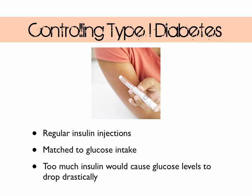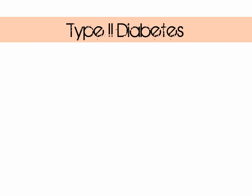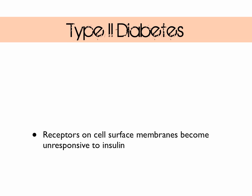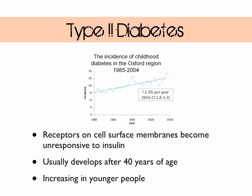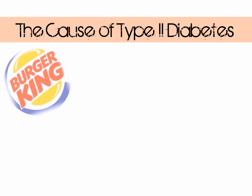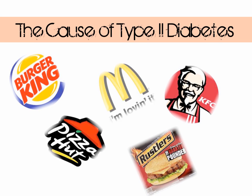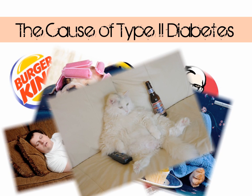Type 2 diabetes occurs when receptors on the cell surface membrane become unresponsive to insulin, and this usually develops in adults of 40 years and older. However, more recently the incidence of type 2 diabetes in children has been increasing, as shown in the graph. Lifestyle is closely linked to this development — regular consumption of carbohydrate-rich foods or a sedentary lifestyle with a lack of regular exercise can contribute.